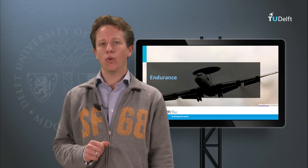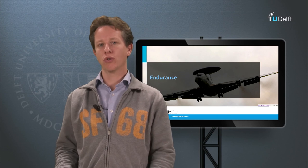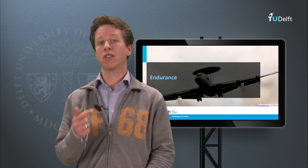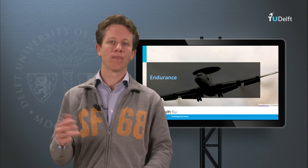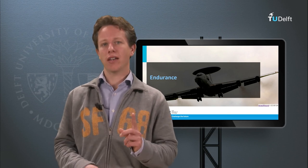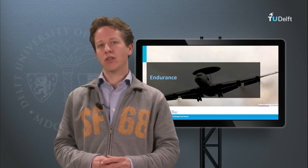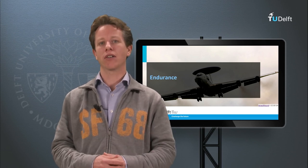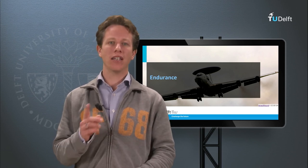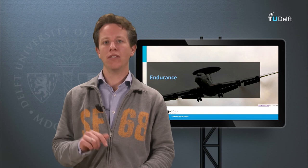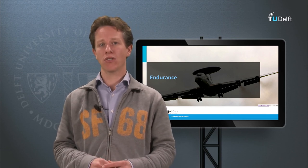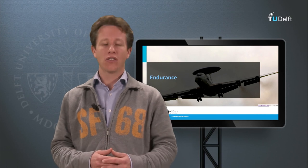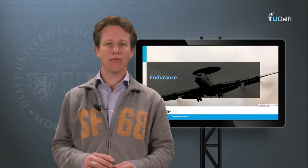We have now covered all the performance parameters in horizontal flight: minimum airspeed, maximum airspeed, range, and endurance. There is one interesting effect that can occur when flying quite slowly, related to the stability of the aircraft. Next time, a Cessna Citation Research aircraft operated by Delft University of Technology will be used to demonstrate this final effect.